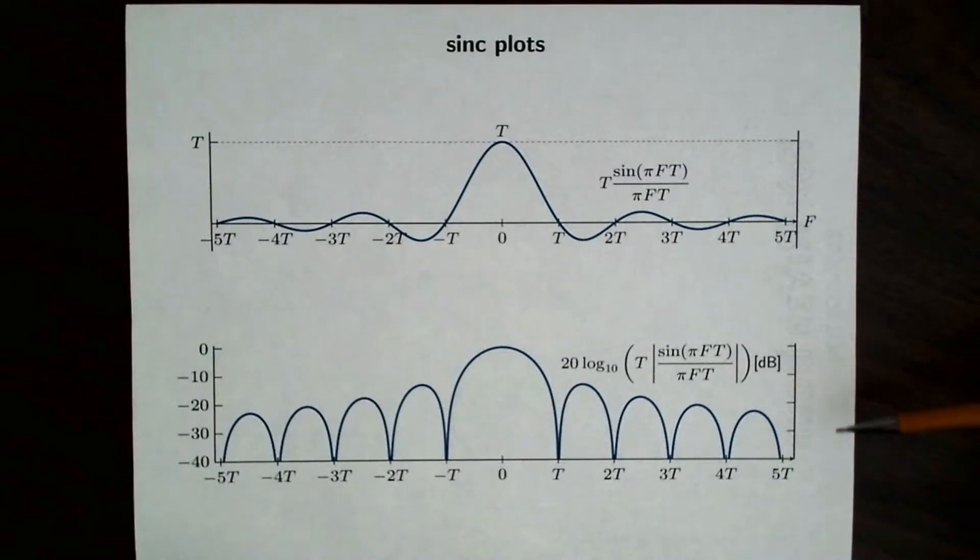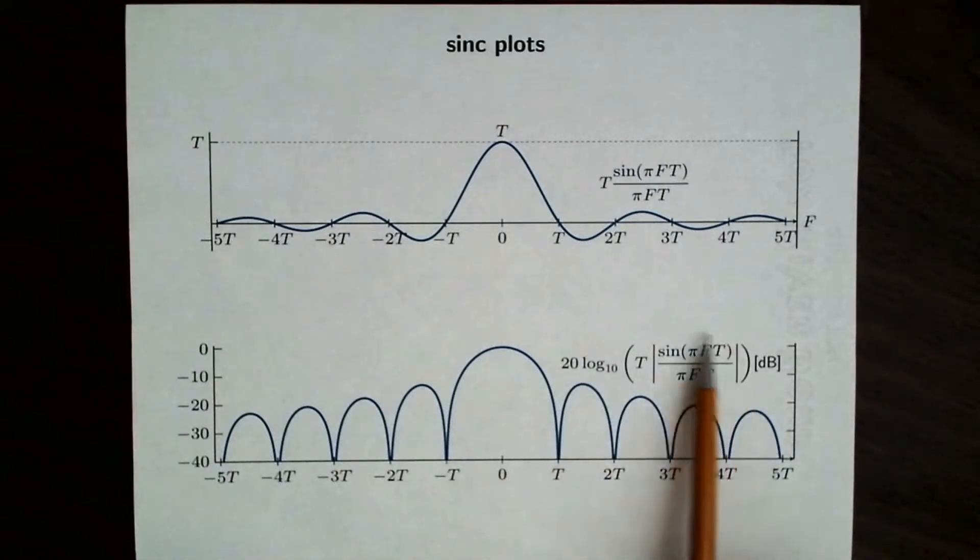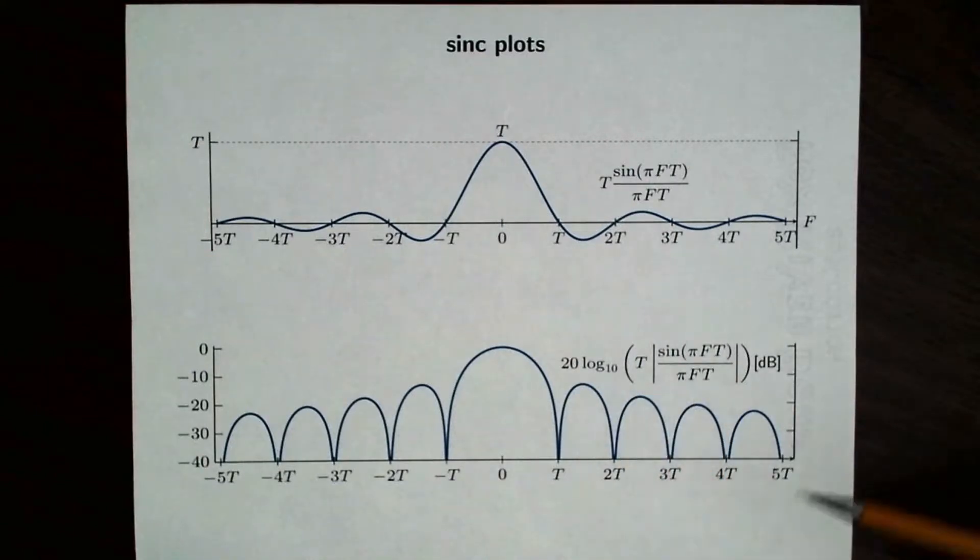This top plot is what I would call a linear amplitude plot. It's often useful to look at the amplitude or the magnitude in decibels. And so what we would do in that case is take 20 times the log base 10 of the absolute value of the function. And then we get this kind of a plot. So the y-axis here is scaled in terms of decibels. The zero crossings from above now appear as nulls in this pattern, and they occur at, again, multiples of T.